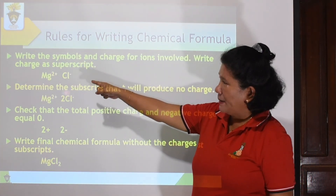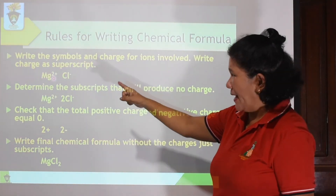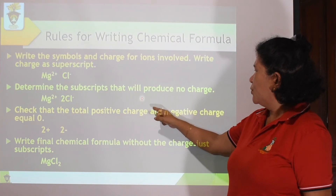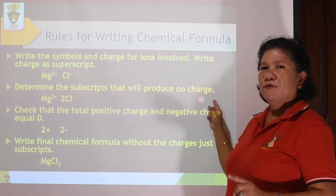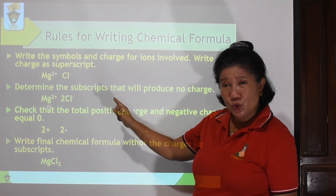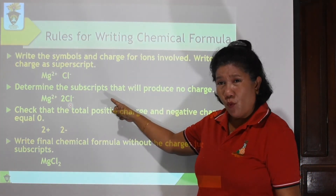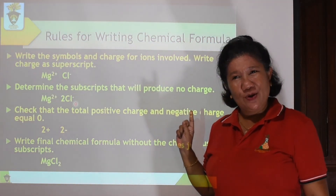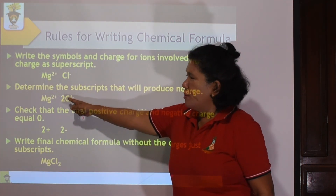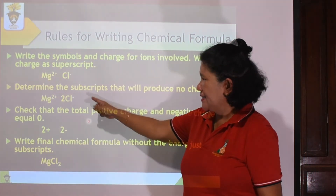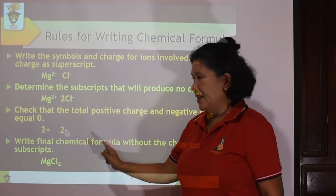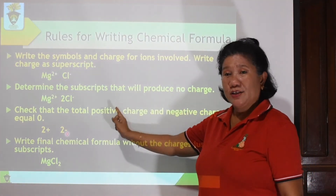Now let us place the charge of magnesium — it is positive 2. Your chlorine is negative 1. Then determine the subscript that will result in no net charge, meaning the total will equal zero. Since magnesium has positive 2, your chlorine — which has negative 1 — should have 2 atoms. So magnesium is positive 2, and chlorine is negative 1 multiplied by 2 gives negative 2. Positive 2 and negative 2 gives a charge equal to 0.